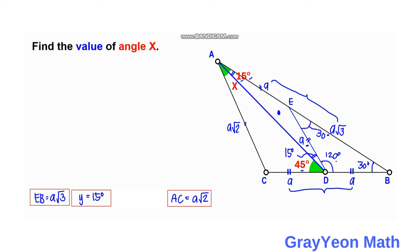For the next step, we use the law of sines on triangle ACD. We need to find X, so we use side CD, which is opposite X, and side AC equals A root 2, which is opposite the 45-degree angle. Setting up the ratio: A over sine X equals A root 2 over sine 45 degrees.